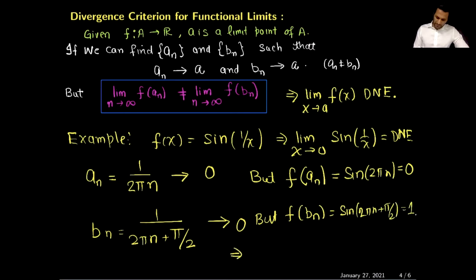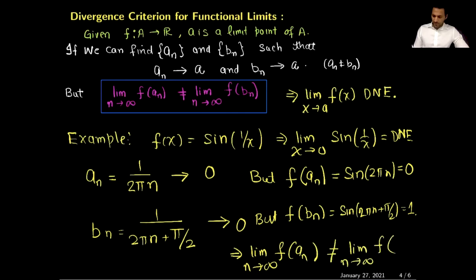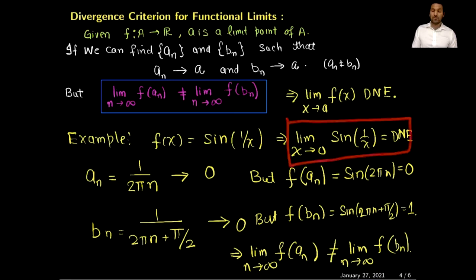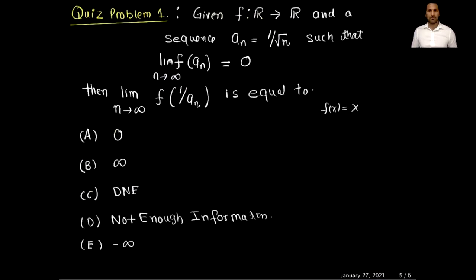Since the limit of f(a_n) = 0 is not equal to the limit of f(b_n) = 1, by the divergent criteria for functional limits this proves that sin(1/x) does not have a limit as x approaches 0. Next I have a quiz problem for you to practice — please pause the video for one or two minutes and work on this problem. This is the end of this video; thank you very much for watching. I will see you in the next video. Bye for now.